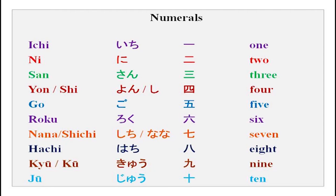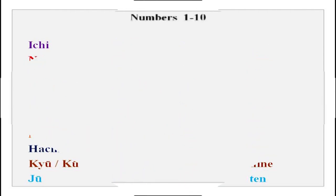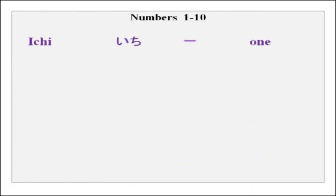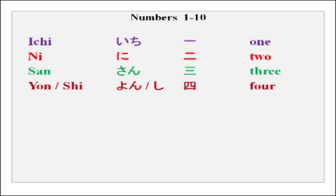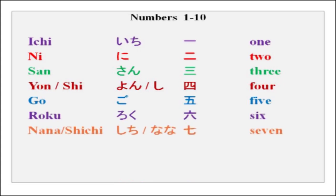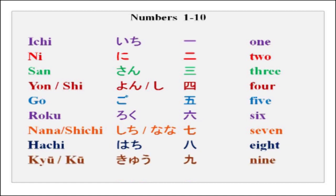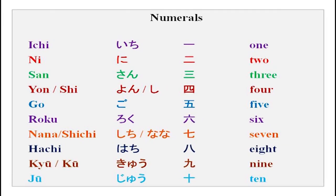For your first lesson we should do the numbers. Very quickly: ichi, ni, san, yon, go, roku, nana, hachi, kyu, juu — it has a long sound. Please practice this so that you are comfortable when we do something new in our next class.